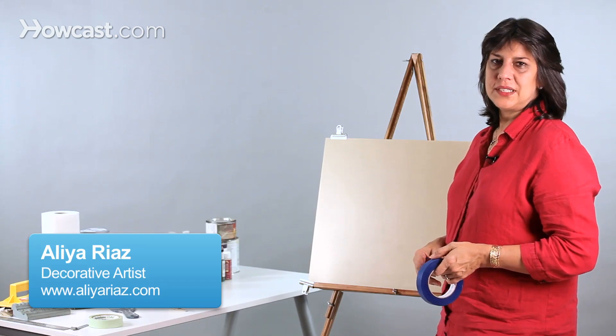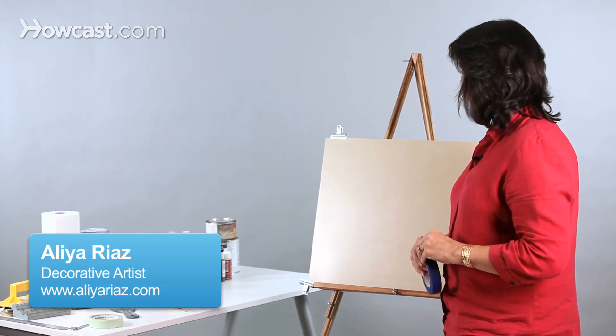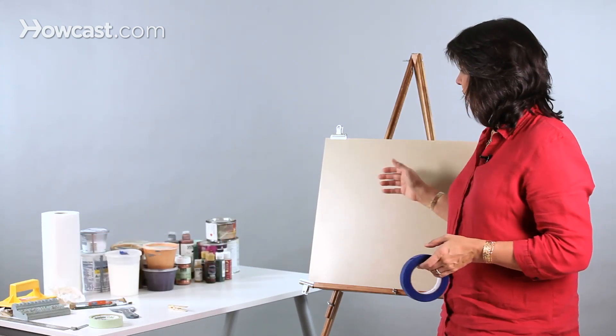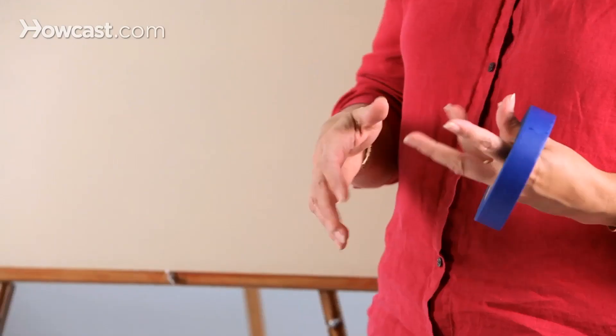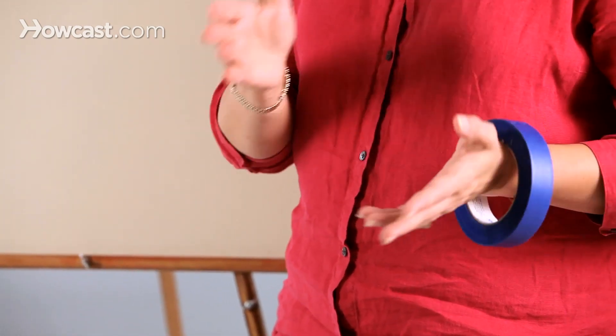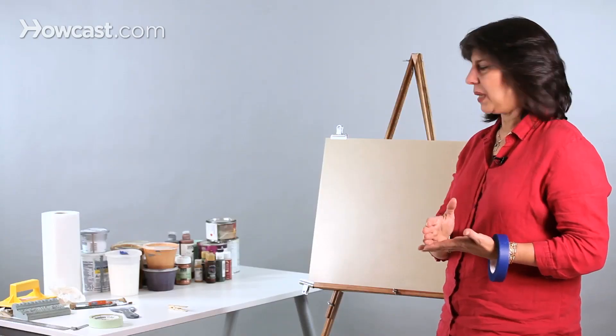In our decorative painting techniques, we're going to be learning today how to make self-stripes, which are basically the same color stripes except there's a glossy one and a matte one.